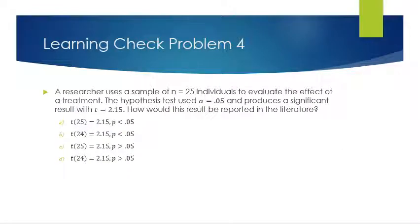Learning check problem 4: a researcher uses a sample of 25 individuals. The hypothesis test uses alpha 0.05 and produces a significant result with t equals 2.15. How would you report this result? Degrees of freedom is 24, so the answer is either B or D. Since the result is significant, the probability is less than the alpha level. The correct format is: t(24) equals 2.15, p less than 0.05. The answer is B.